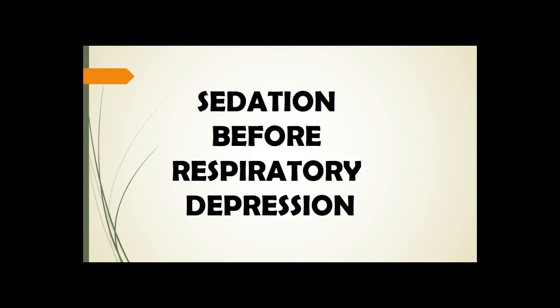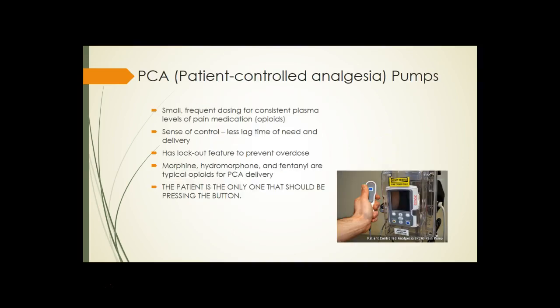PCA pumps — patient-controlled analgesia. Key points: it gives the patient a sense of control, there is less lag time between need and delivery, and it has a lockout feature to prevent overdosing. Morphine, hydromorphone, and fentanyl are typical opioids used for PCA delivery. Most crucially: the patient is the only one who should be pressing the button — nobody else should push it.